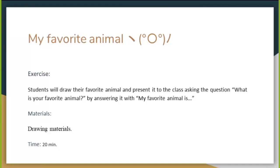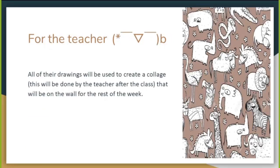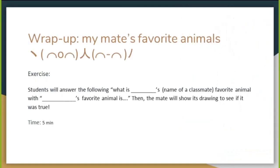For the next part, which is the largest at twenty minutes, it is called My Favorite Animal. The exercise is that students will draw their favorite animal and present it to the class. When asked by the teacher "What is your favorite animal?", they will answer using the sentence "My favorite animal is..." followed by the name of the animal they drew. For materials, of course, drawing materials are needed. All of their drawings will be used by the teacher after class to create a collage that will be on the wall for the rest of the week — an incentive so that students will be proud to see their drawings displayed.